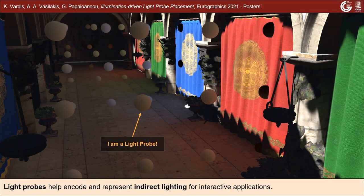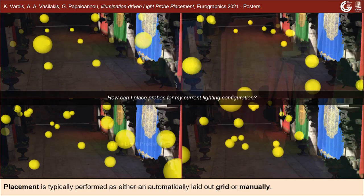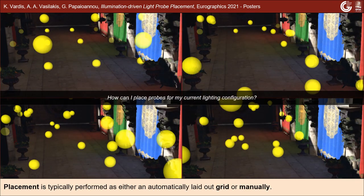Light probes are an effective solution for plausible indirect lighting in interactive applications and commodity hardware. Unfortunately, placing the probes is usually performed either by an error-prone manual procedure or through automated solutions that don't consider the light distribution in the scene.